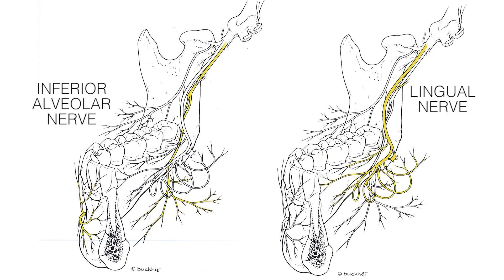In the pterygomandibular space the anaesthetic solution diffuses to the lingual nerve as well, therefore the lingual nerve is also targeted by the inferior alveolar nerve block technique.